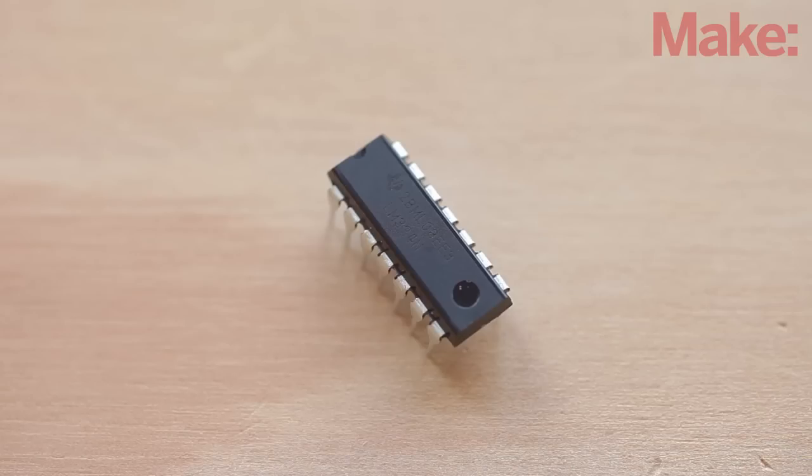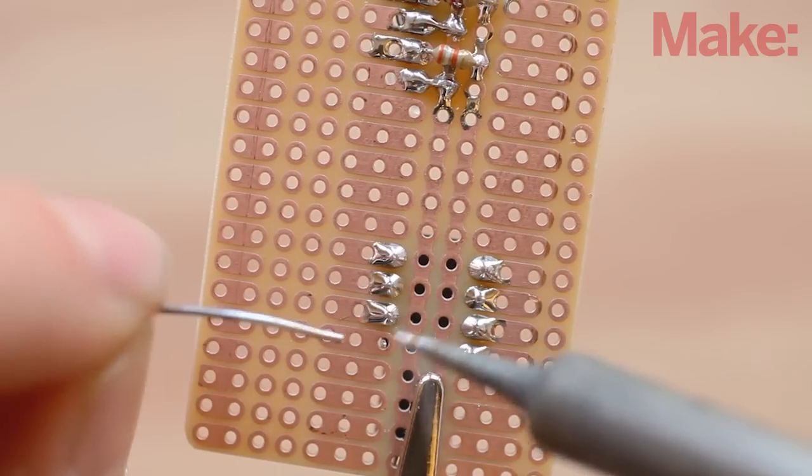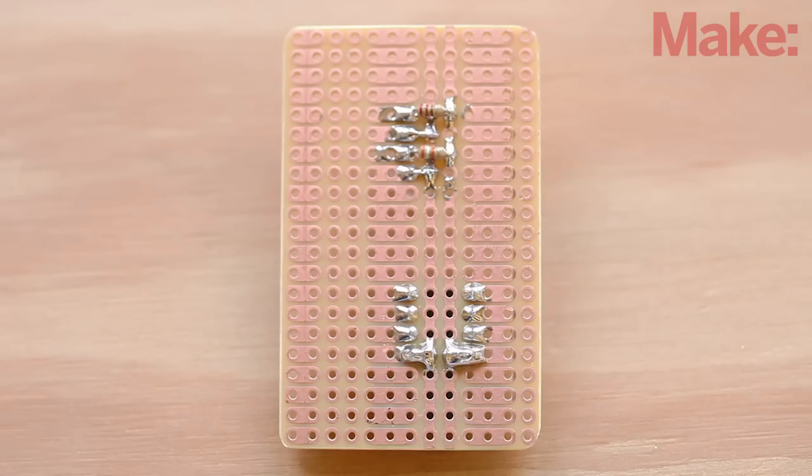The LM324 IC contains four identical op amps. Our design only uses two of them. To avoid making accidental connections, clip off the bottom three leads on each side of the chip. Solder the chip's pins on the bottom of the board. Provide power and ground connections by flowing solder between pins 4 and 11 and the rails adjacent to each.